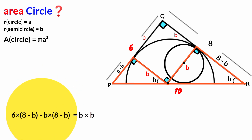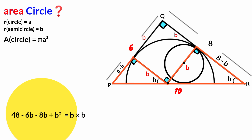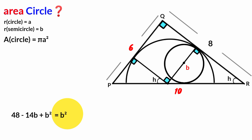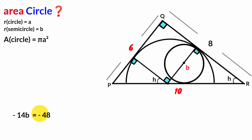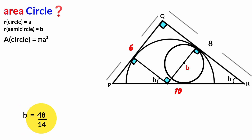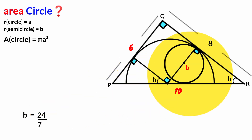Cross-multiplying: (6 − B)(8 − B) = B². Expanding the left side: 6×8 − 6B − 8B + B² = 48 − 14B + B². Since B² appears on both sides it cancels, leaving 48 − 14B = B². Bringing 48 to the right and dividing through by 14: B = 48/14. Since 48 = 24×2 and 14 = 7×2, the twos cancel, giving B = 24/7.